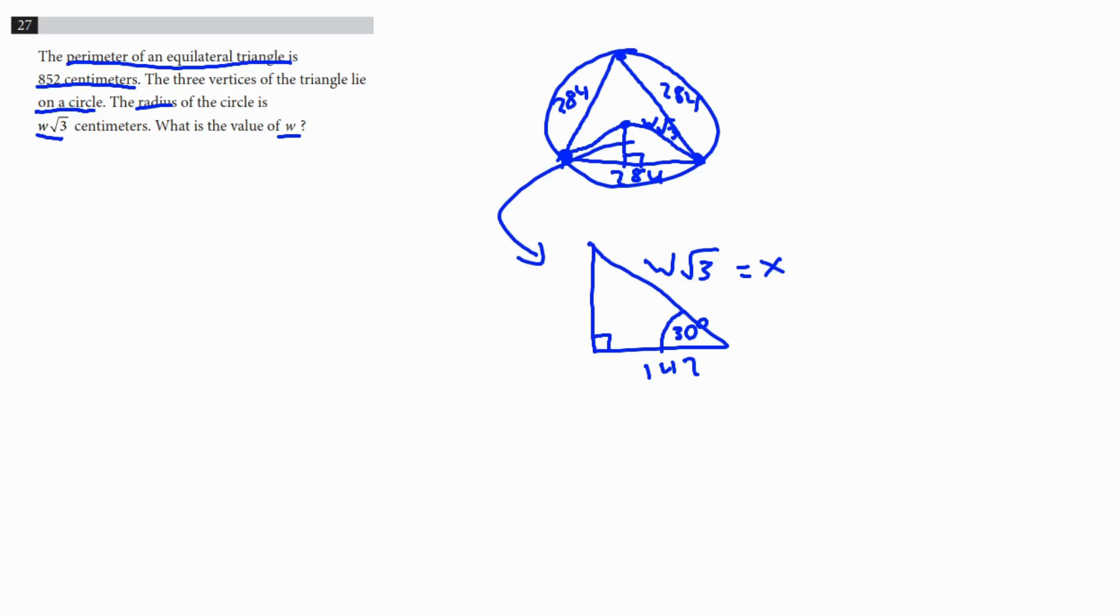So what we'll do is we'll do, let me go over here. We'll do cosine 30, because we have the adjacent side, equals adjacent over hypotenuse, so 142 over X. Cosine 30, if you know your unit circle, that'll be square root of three over two equals 142 over X.